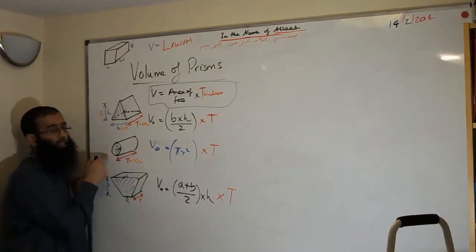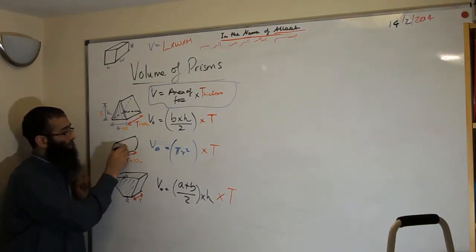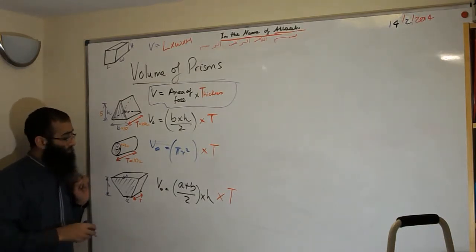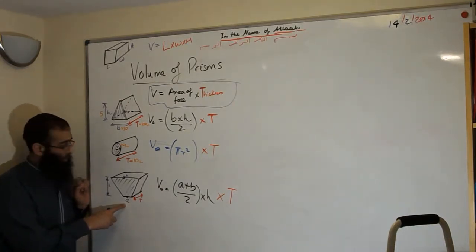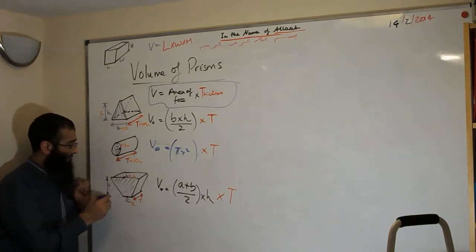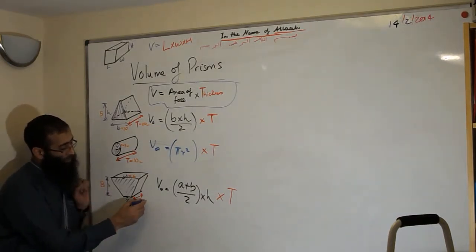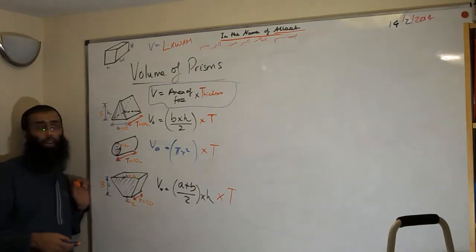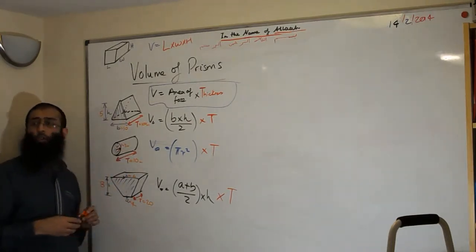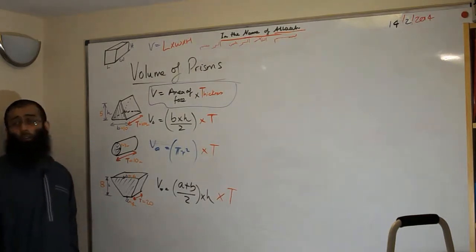For the cylinder, the radius is 3 meters and the thickness is 10 meters. For the trapezoid prism, side A at the bottom is 4, side B is 6, the height is 8, and the thickness is 20. Now let's use these values to actually do a question on each shape.